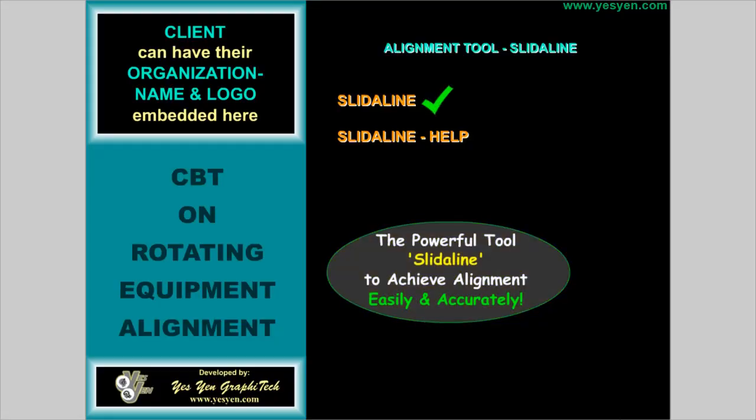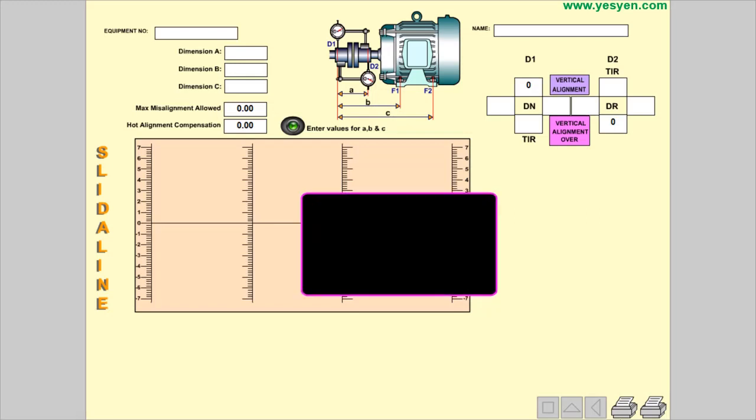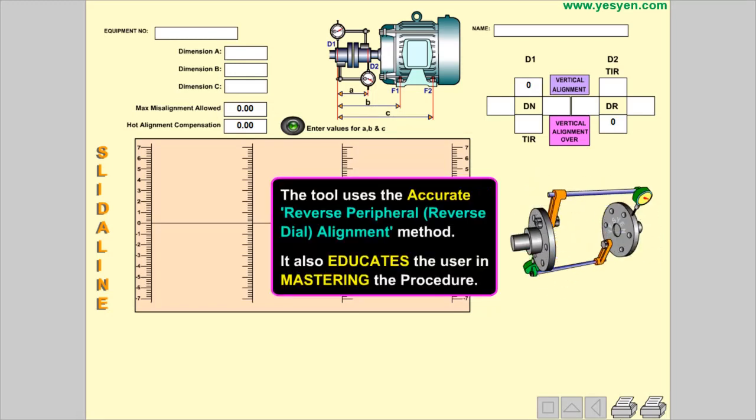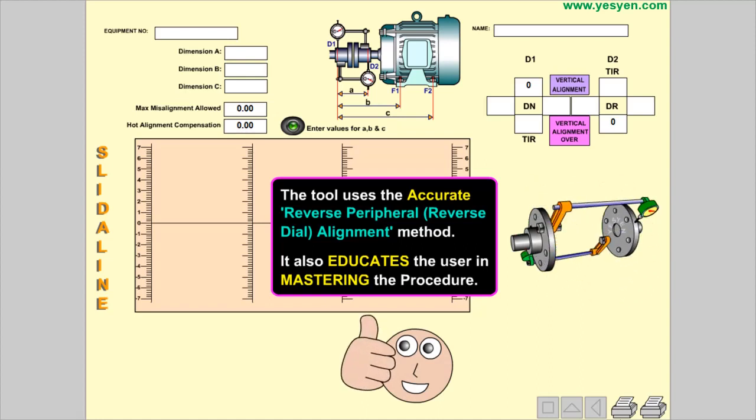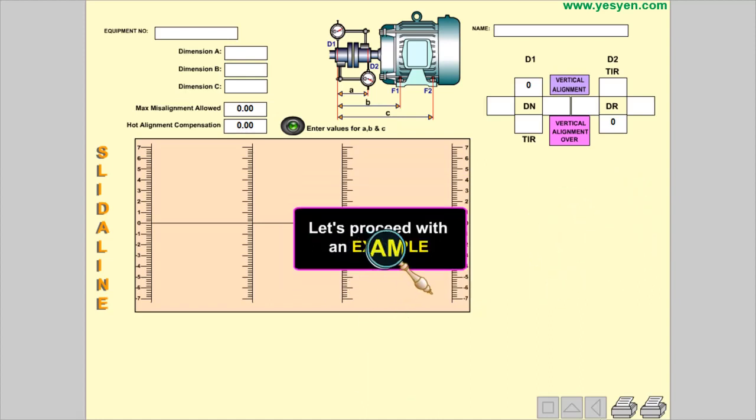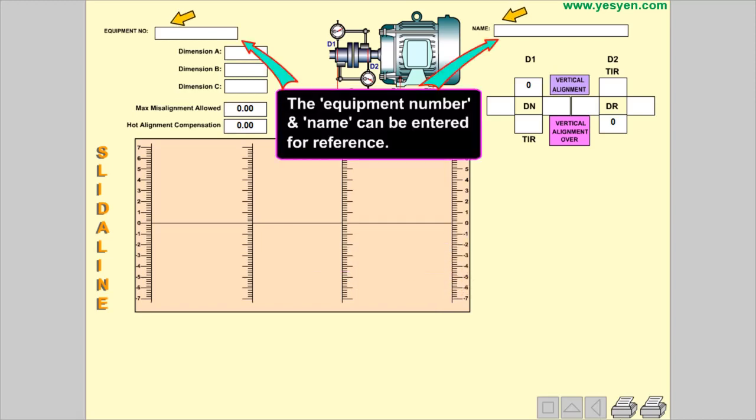The powerful tool slide align to achieve alignment easily and accurately. The tool uses the accurate reverse peripheral or reverse dial alignment method. It also educates the user in mastering the procedure. Let's proceed with an example.